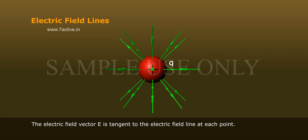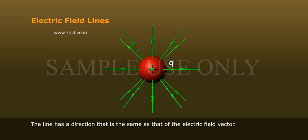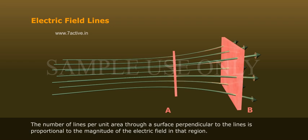The electric field vector E is tangent to the electric field line at each point. The line has a direction that is the same as that of the electric field vector. The number of lines per unit area through a surface perpendicular to the lines is proportional to the magnitude of the electric field in that region.